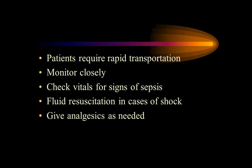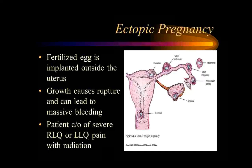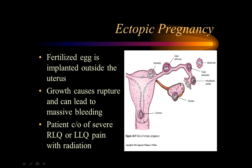Ectopic pregnancy: the embryo can attach in different locations outside the uterus — the most common being the distal two-thirds of the fallopian tube, though ovarian implantation is also known. Any abdominal pain in a female of childbearing age: they are pregnant until proven otherwise, and ectopic until proven otherwise, especially with vaginal bleeding.